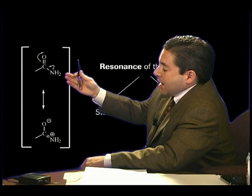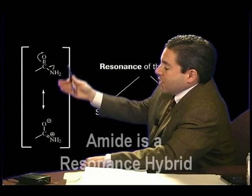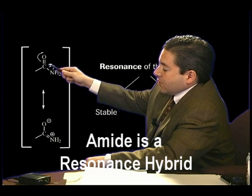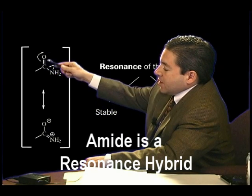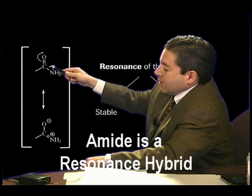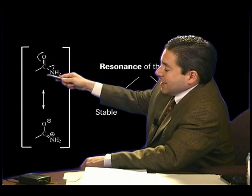So, the amide is, in fact, a resonance structure in which there is delocalization of electrons over the three atoms of the oxygen, the carbon, and the nitrogen. And this is the amide.